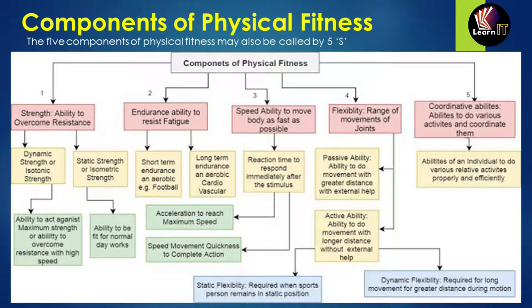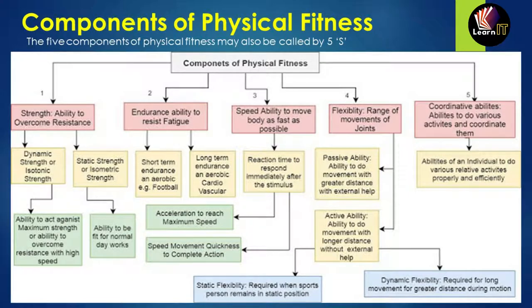The first component is strength. Definitions of strength: it is the ability to overcome resistance; the quality or state of being physically strong; and the capacity of an object or substance to withstand great force or pressure. Strength is divided into two categories: dynamic strength, also called isotonic strength — the ability to act against maximum resistance with high speed — and static strength, also called isometric strength — the ability to be fit for normal daily work.